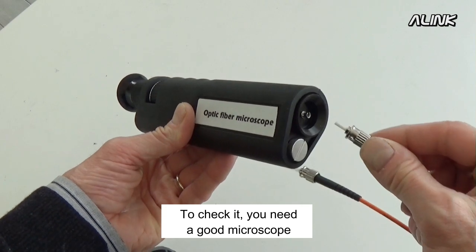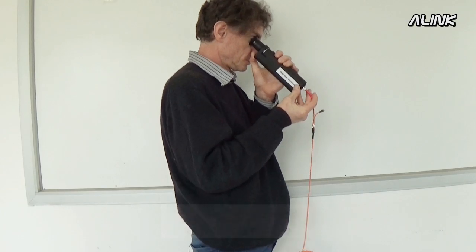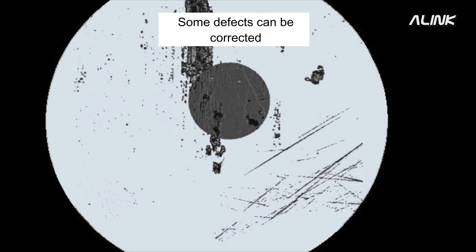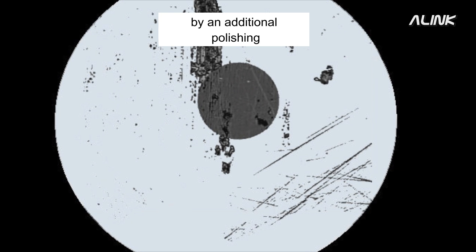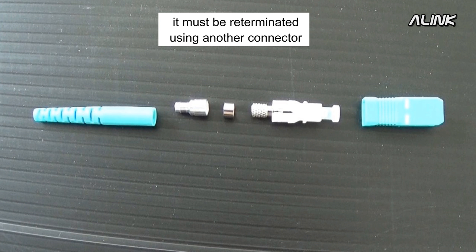To check it, you need a good microscope. Some defects can be corrected by additional polishing. If the fiber remains unacceptable, it must be re-terminated using another connector.